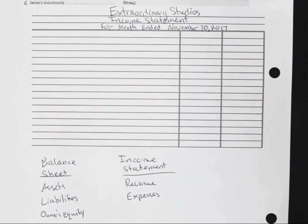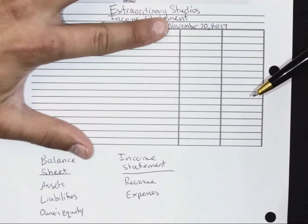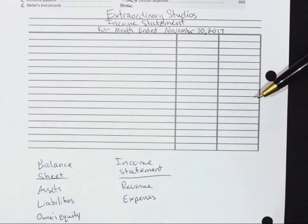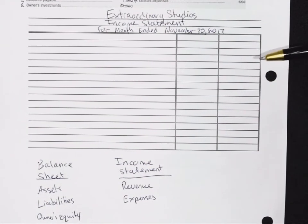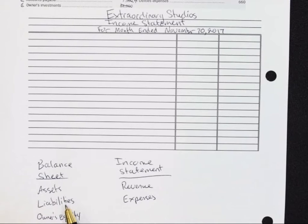A balance sheet, on the other hand, is a snapshot in time — one point in time. So you would never have a period for a balance sheet; you would only have the date. Accounts on an income statement are called temporary accounts, and the ones on the balance sheet are called permanent accounts.